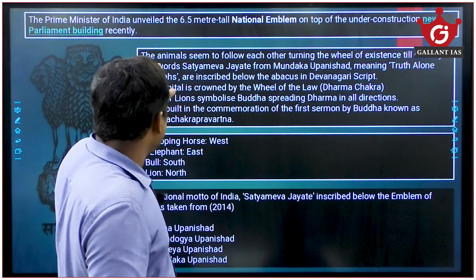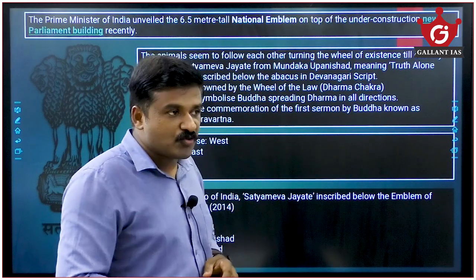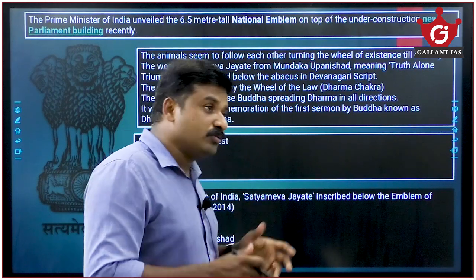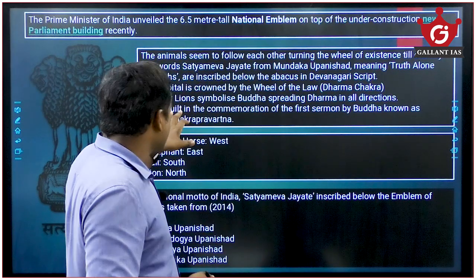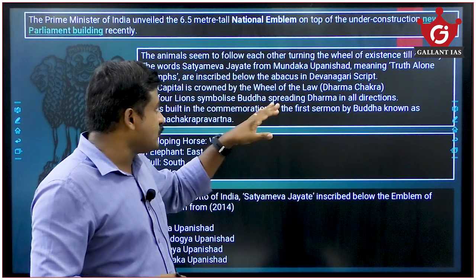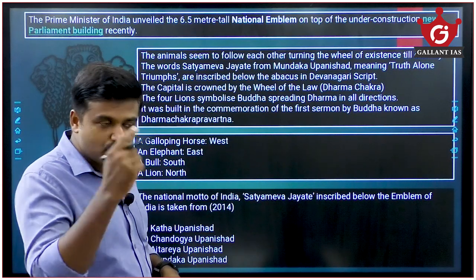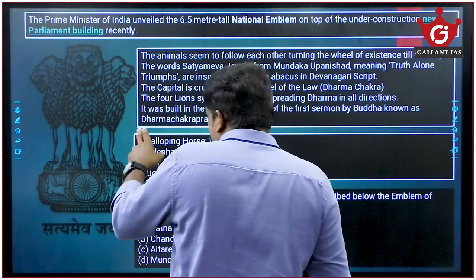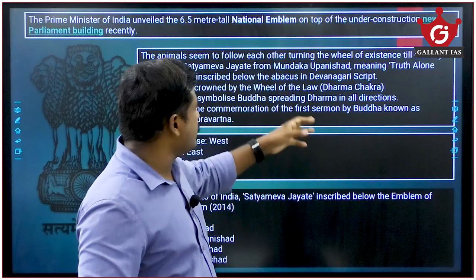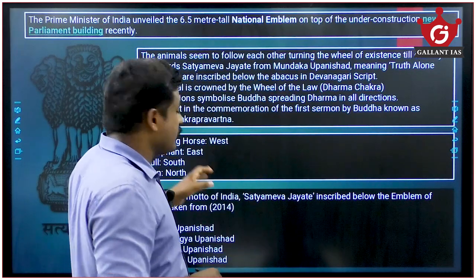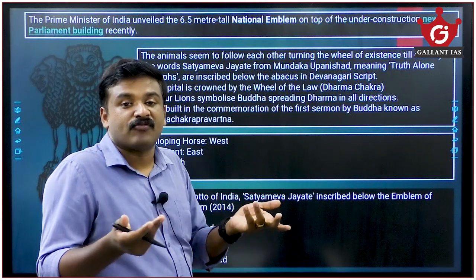Recently, the Prime Minister of India unveiled a 6.5-meter tall national emblem on top of the new Parliament structure — so UPSC can ask questions about the national emblem. The abacus shows animals following each other turning the wheel of existence. On top are four lions standing. Below is 'Satyameva Jayate,' taken from the Mundaka Upanishad, meaning 'Truth Alone Triumphs.' UPSC has already asked which source this phrase is from.